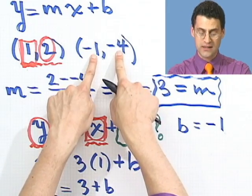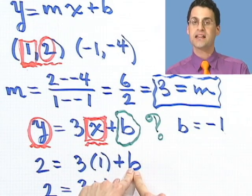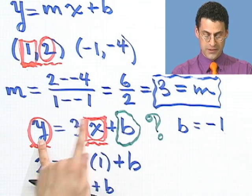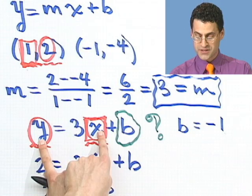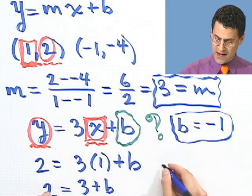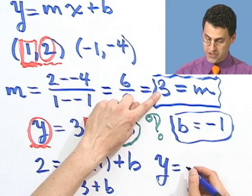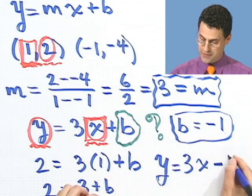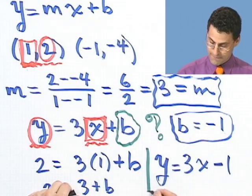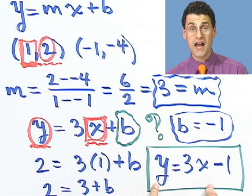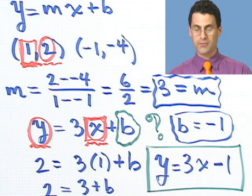So I can find the y-intercept even if I'm not given it, by just taking one of the points and plugging in. By the way, if you would have taken the other point and plugged it in, you would get the same answer for b. You can try that with (-1,-4), and you'll still get -1 for b. Armed with that, the equation of the line is y equals 3x plus b, and b here is -1. So the equation is y equals 3x minus 1. So just given two points, I can find the equation of the line in slope-intercept form. All right, you try some of these.